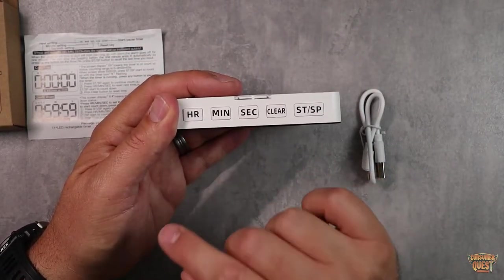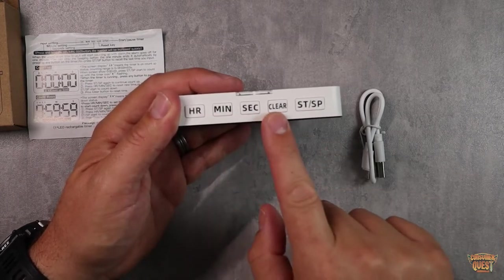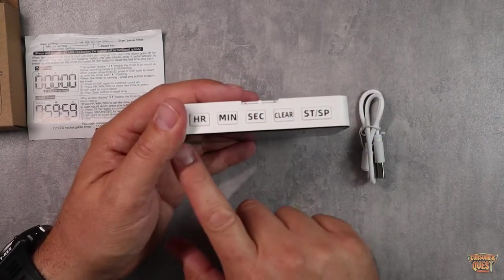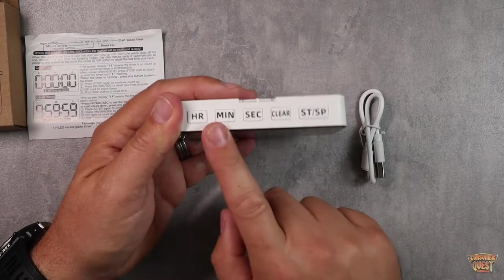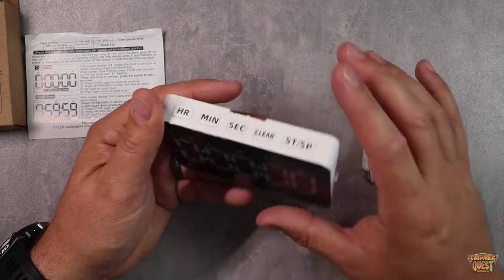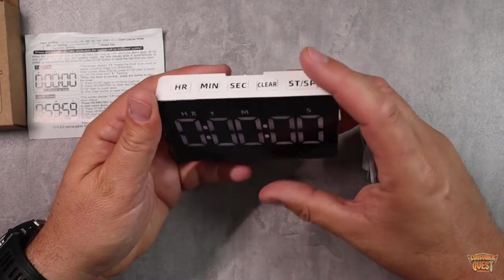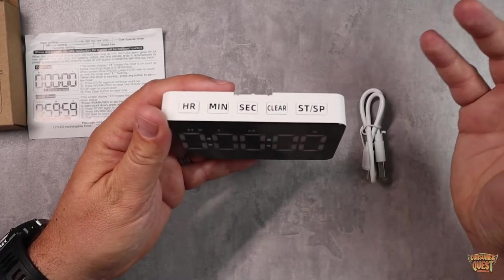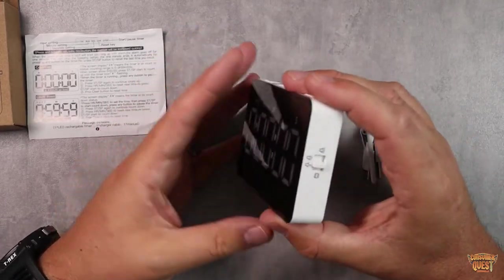Each press of these buttons will go up one increment. So one hour, one minute, one second. This can go up to nine hours, 59 minutes and 59 seconds maximum based on the number of digits on the screen. Your clear button will clear it. You get your start stop here as well.